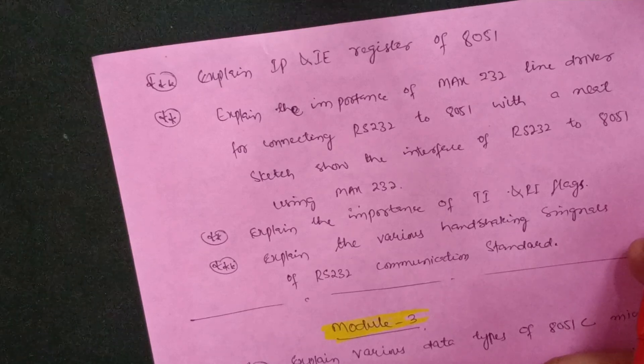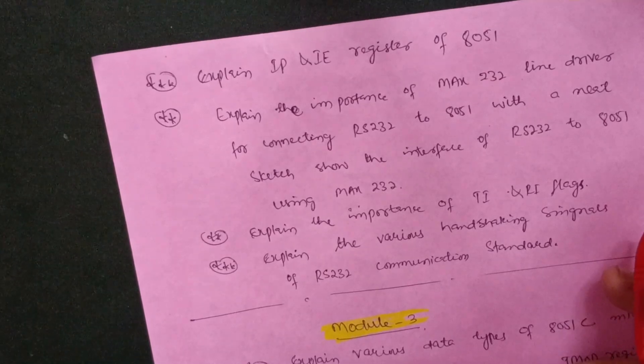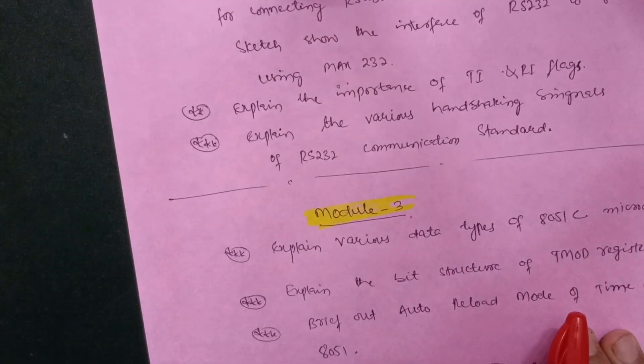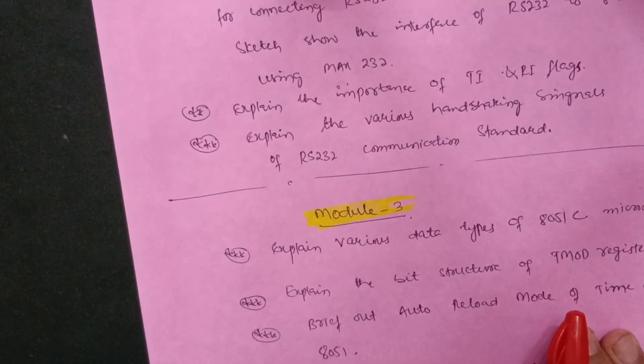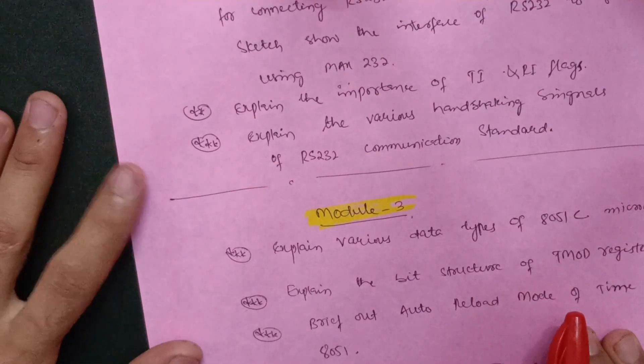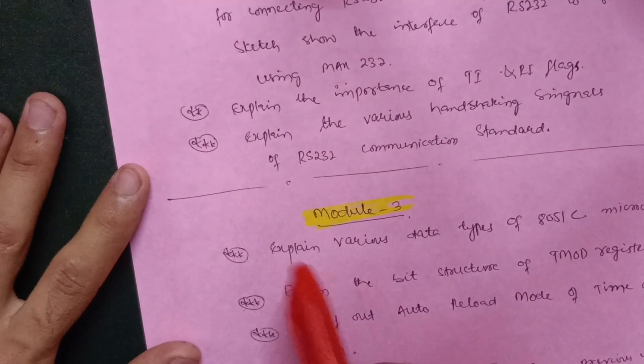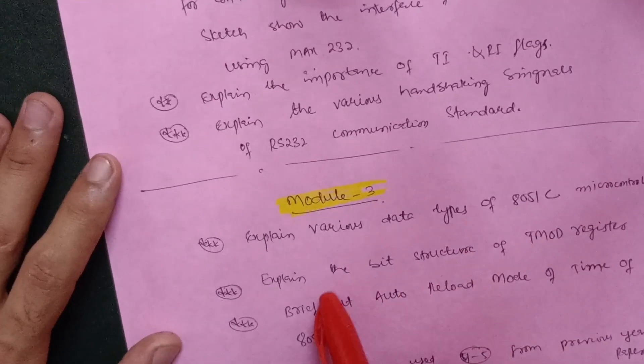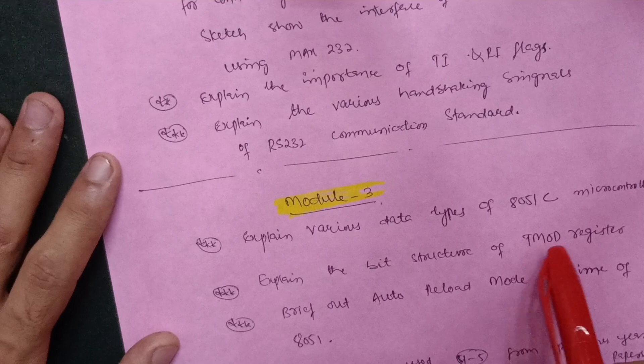In Module 3 you have also some programs. Let me explain some important questions in Module 3. First the theoretical part, then you can usually go through the programs also. Explain various data types of 8051 C microcontroller.